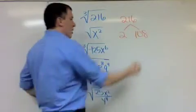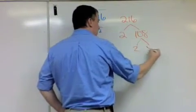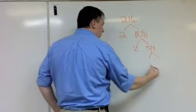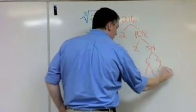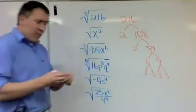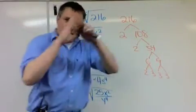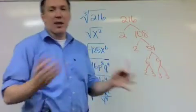Well, I can break down 108. 108 is two times 54. Well, 54 is six times nine. Six is two times three. And nine is three times three. And so once I've broken this down all into its prime factorization tree, you've seen this before.